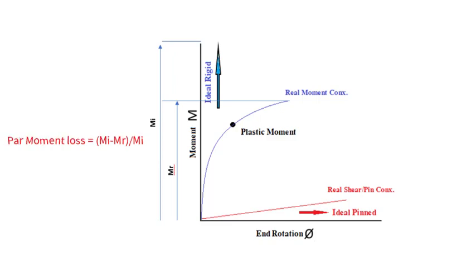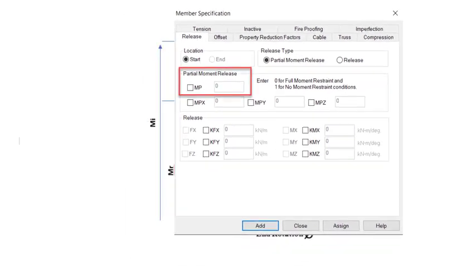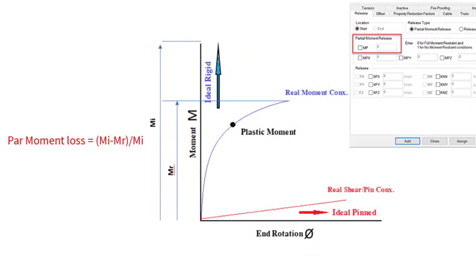Now this feature that is the partial moment release can be defined at any joint in STAAD. So in STAAD it is represented as MP so don't get confused with the term MP because in most of the definition MP is representing the plastic moment but in STAAD it is representing the partial moment release. So MP is MR minus MI over MI meaning if the MP is 0 the connection is to be taken as ideally fixed and if the MP is 1 then the connection is to be considered as ideally pinned. Please remember the word ideal here. So the value in between will represent partially restrained condition.